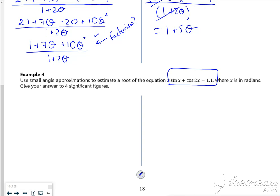Right, so the 3 sine x becomes a 3x. The cos 2x becomes a 1 minus a half x squared and that's equal to 1.1. So if I rearrange it as a quadratic, I've got a half x squared minus 3x. Take the 1.1, gives me a plus 0.1.